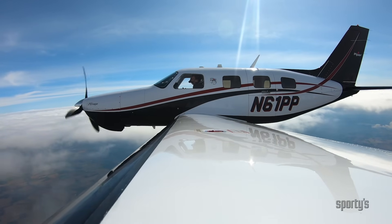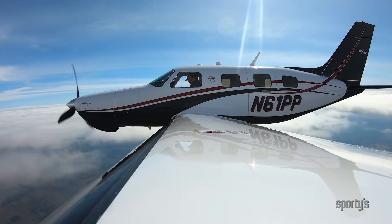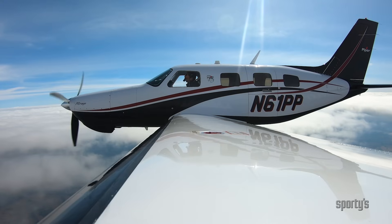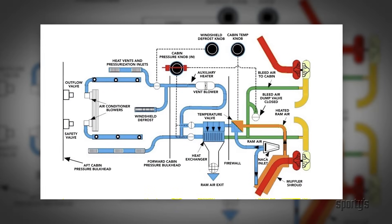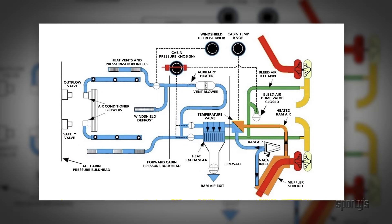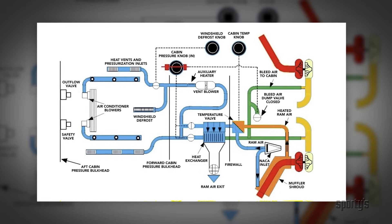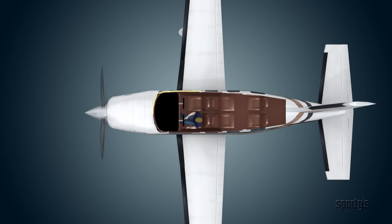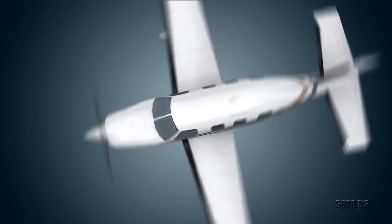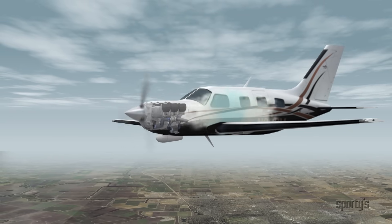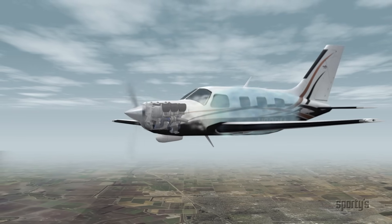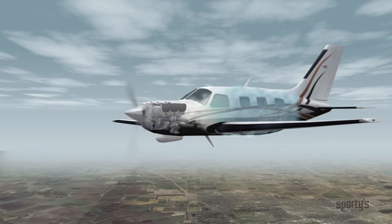There are two ways to safely and legally climb into the flight levels: provide supplemental oxygen to the crew and passengers, or fly a pressurized airplane. While the individual components of a pressurized airplane are fairly complex, the basic concept of how the system functions as a whole is fairly simple. The cabin, flight deck, and sometimes the baggage compartments are incorporated into a sealed vessel capable of retaining air under pressure higher than the outside atmospheric pressure. In a piston-powered airplane, air is pumped into the cabin from the engine's turbocharger, while turbine aircraft use bleed air from the compressor section of the engine.